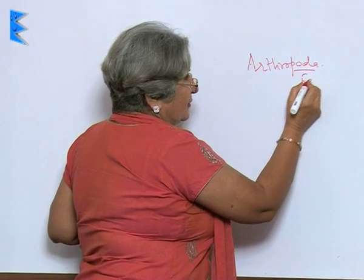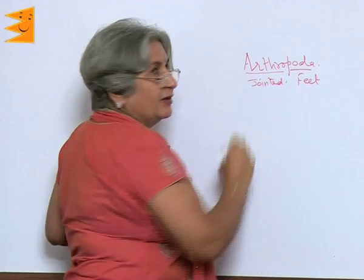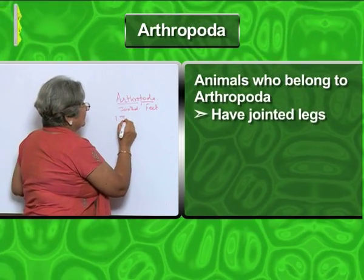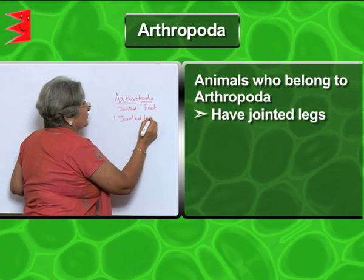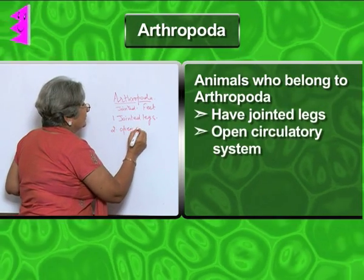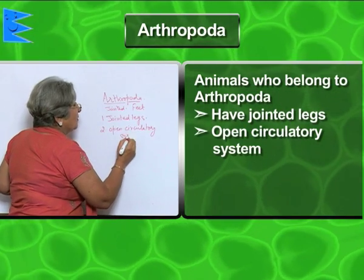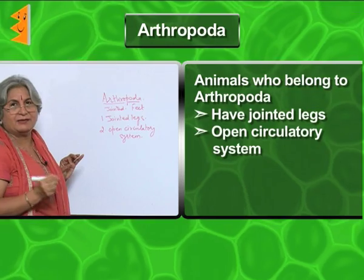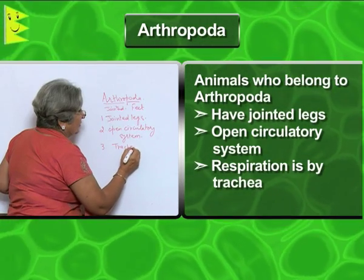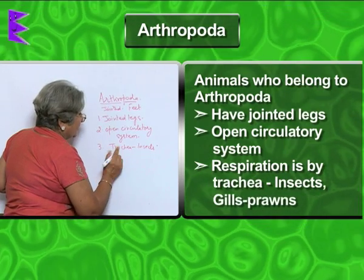Poda means feet and arthro is jointed. The animals that belong to Arthropoda have jointed legs. They have an open circulatory system, that means no blood vessels — blood is inside the body. Respiration is by trachea in insects, and gills in prawn.